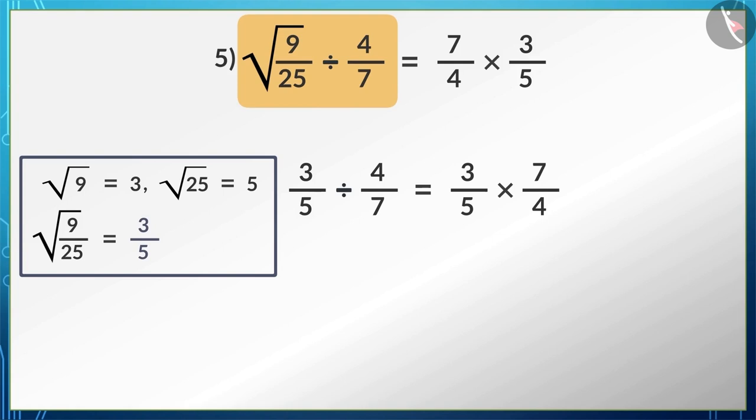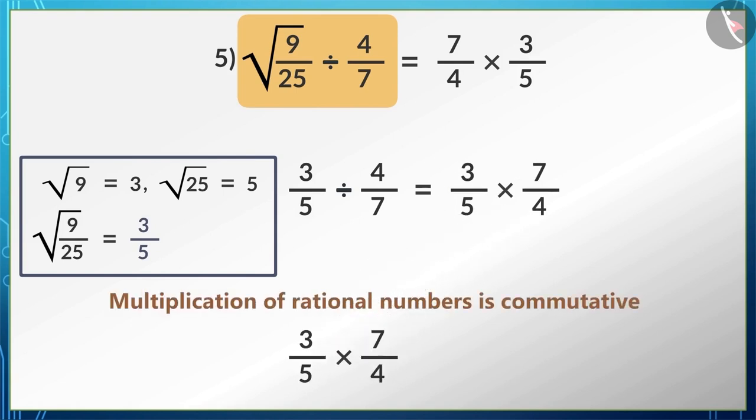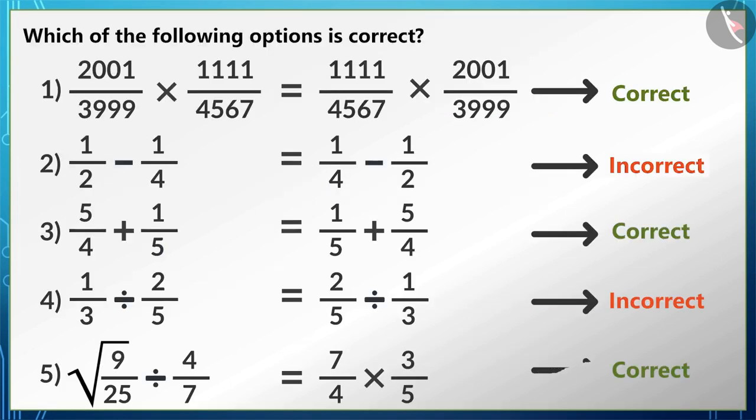Now we can write RHS as follows, which is equal to 3/5 multiplied by 7/4. We know that the multiplication of rational numbers is commutative, so we can also write 3/5 multiplied by 7/4 as 7/4 multiplied by 3/5, because changing the order will not change the answer. We can see that in our option, LHS is equal to RHS. That is, the last option is correct.